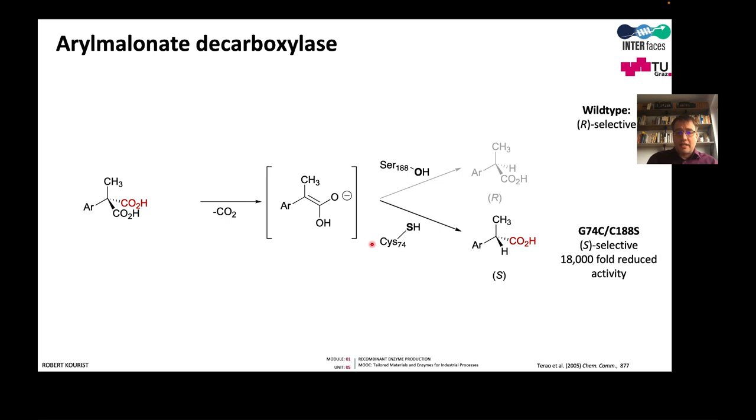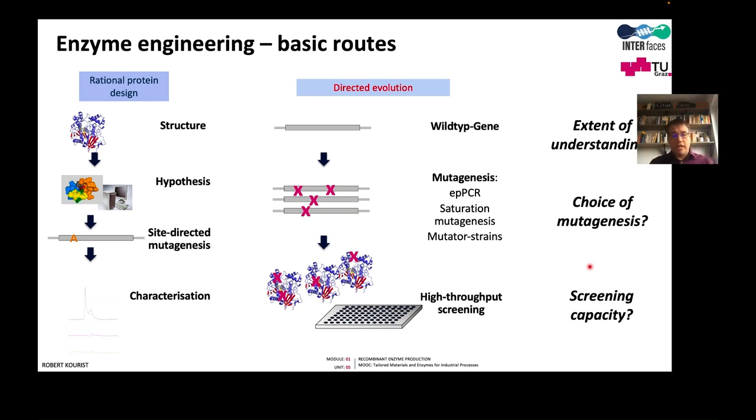Unfortunately, the activity of the resulting mutant, G74C C188S, was 18,000 fold reduced. Somehow this cysteine, or maybe the serine, or maybe both, they interfered with activity. And at this stage, the researchers had no clue how they could recover the activity of this mutant, and therefore they went for directed evolution.